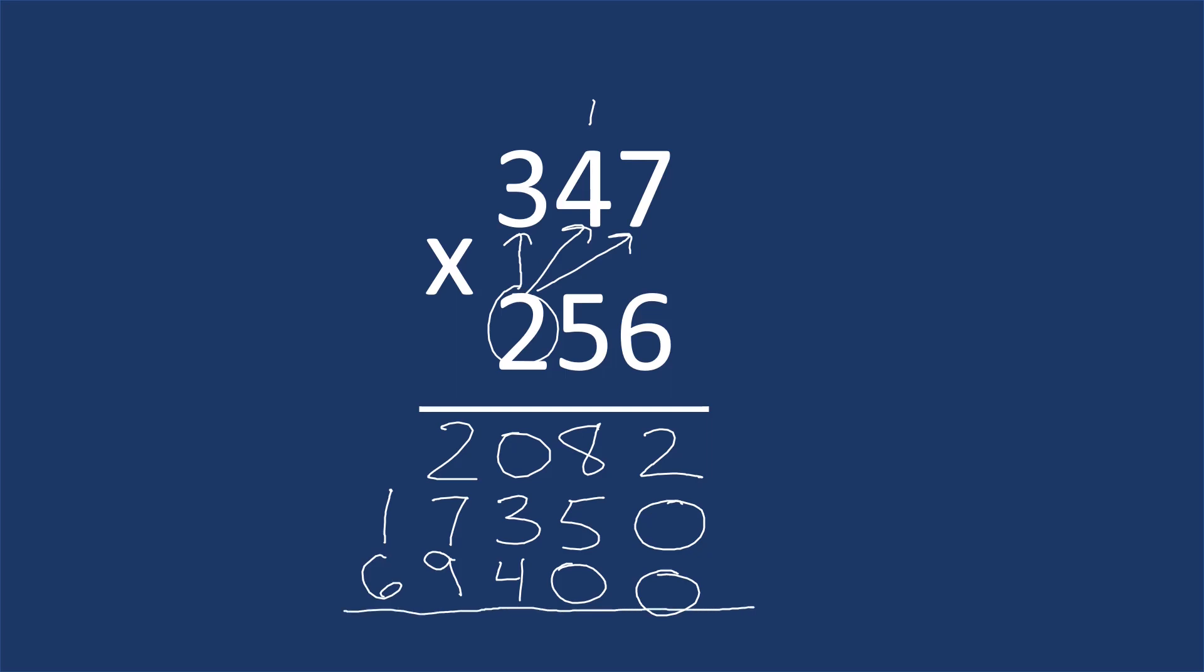Now from here, we're going to add the columns up. So we do 2 plus 0 plus 0, which is 2. We do 8 plus 5 plus 0 is 13. Put down the 3. Carry the 1.